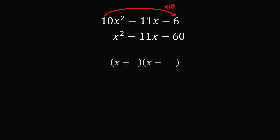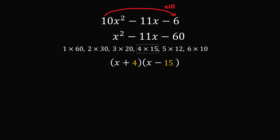Since we have a minus 60, we will need one number that's positive and another that's negative. So this quadratic will factor as x plus a number times x minus a number. We need two numbers with a product of 60 and a difference of 11. The one that works is 4 times 15. The middle term is minus 11x, so we need to subtract the larger number. This means we factor this quadratic as x plus 4 times x minus 15. We slid the coefficient of 10, so we divide these numbers by 10: 4 over 10 and 15 over 10. Simplifying: 4 over 10 equals 2 over 5 and 15 over 10 equals 3 over 2.